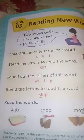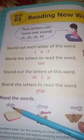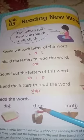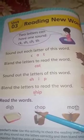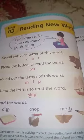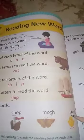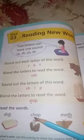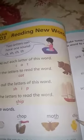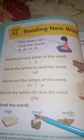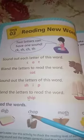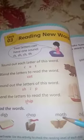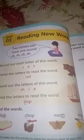Now we will read other words also. D-I-SH: dish. CH-A-P: chop. N-A-TH: moth. CH-IK-K: chick. So these are graphemes: SH, CH, TH, KH. These are the graphemes used in dish, chop, moth, and chick.